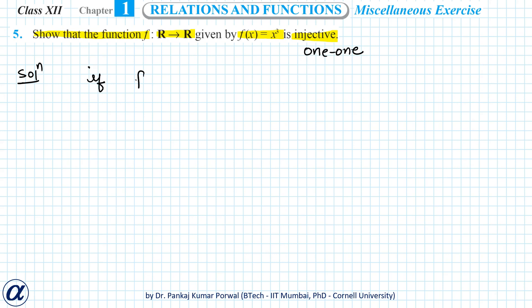to show that if f(x₁) equals f(x₂), then this implies that x₁ equals x₂. So let's start with f(x₁) equals f(x₂). This implies that x₁³ equals